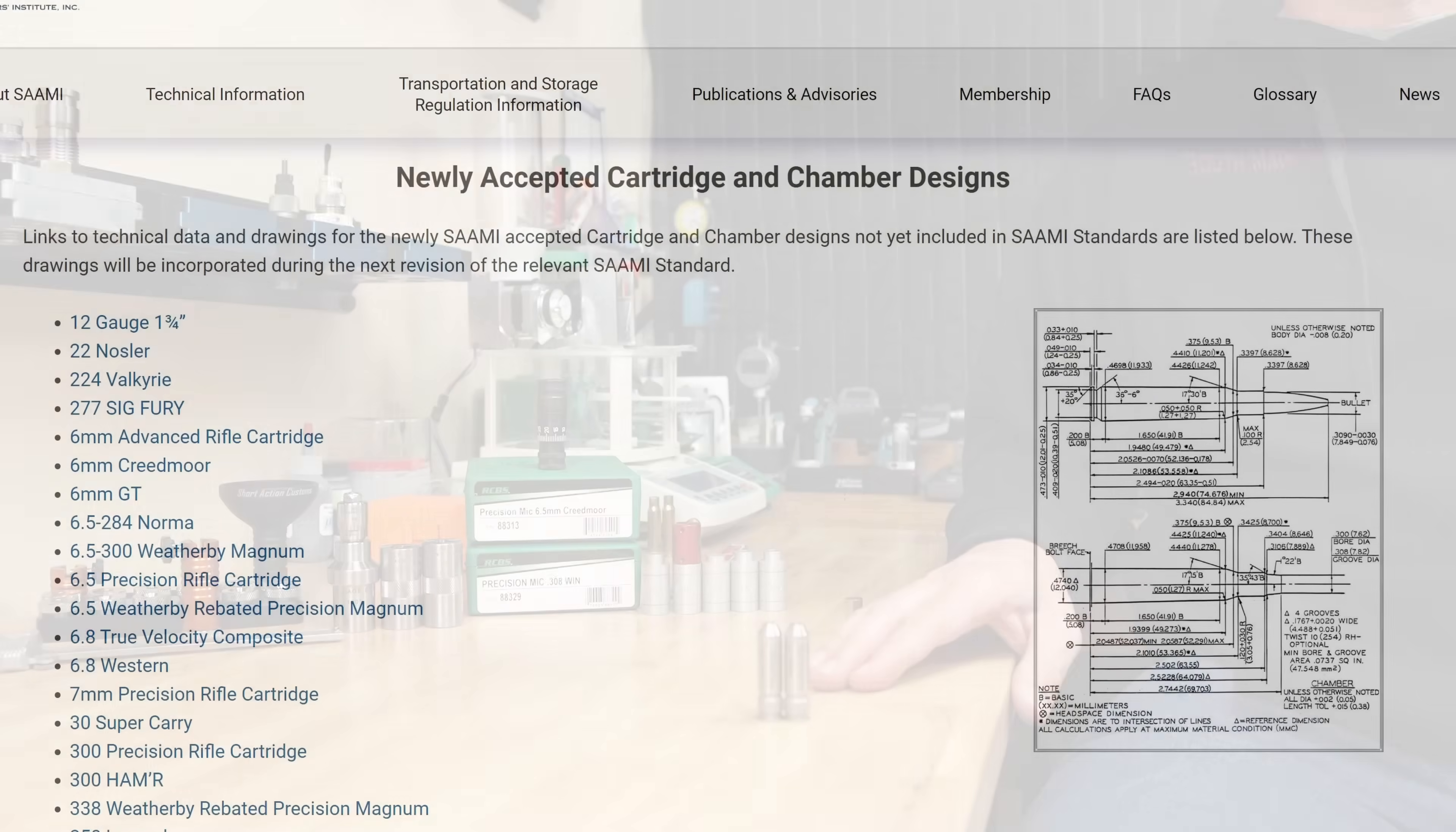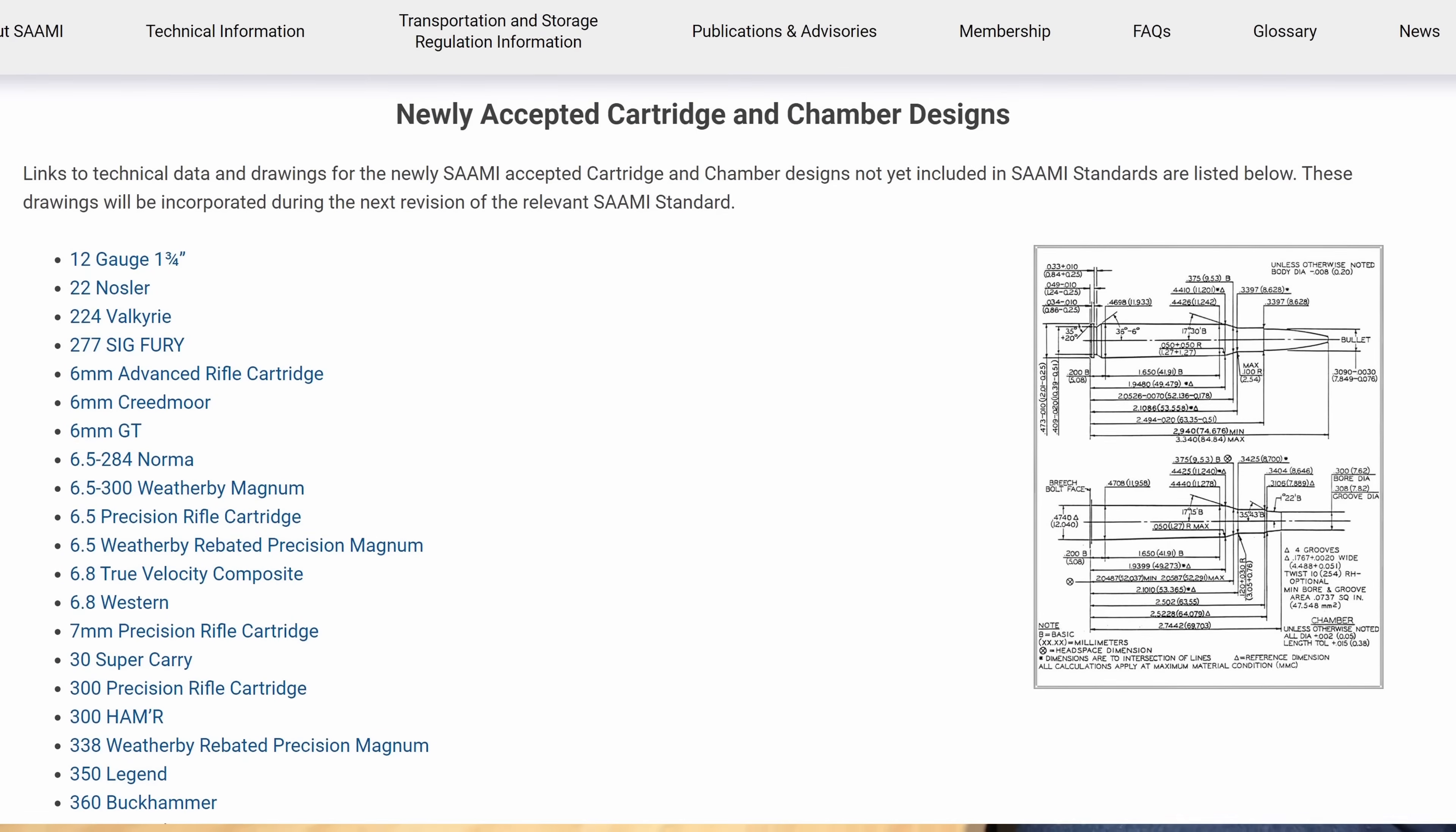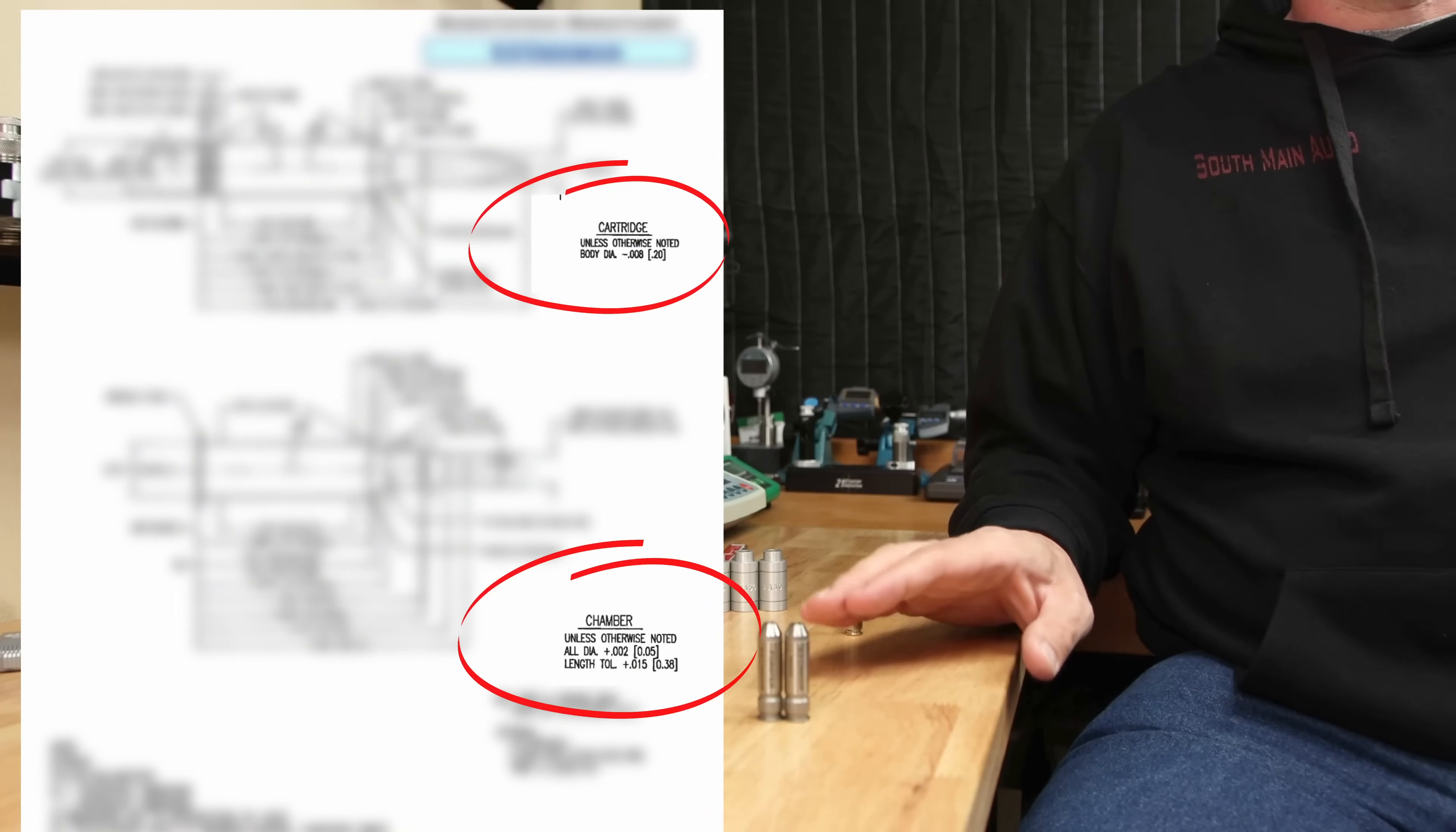We'll be using 6.5 Creedmoor as our example, but you can substitute whatever caliber of interest and find out the information that you need. When you start looking at SAMI specs for your caliber of interest, you're going to see that there's likely going to be two drawings. Unless you're chambering a barrel, you're probably interested in the one labeled cartridge, not the chamber.